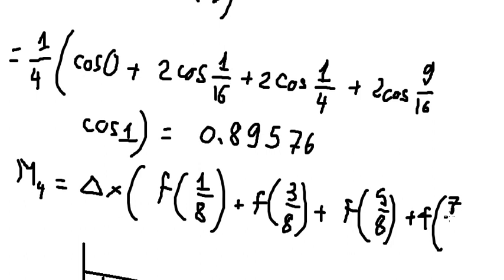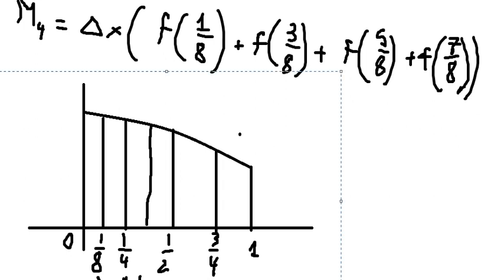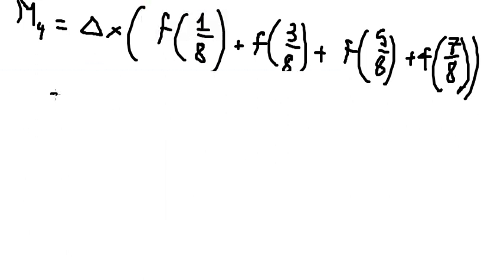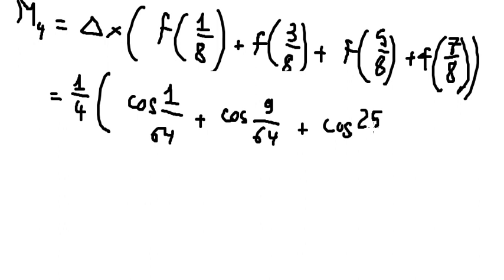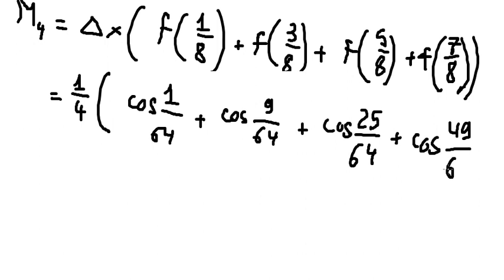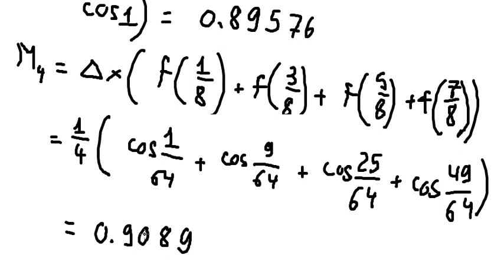After we have these midpoints, we can put the values in. So delta x is 1 over 4. This one we have cosine of 1 over 64. This one we have cosine of 9 over 64. The next one we have cosine of 25 over 64. And the last one is cosine of 49 over 64. And that is the answer. Thank you for watching.